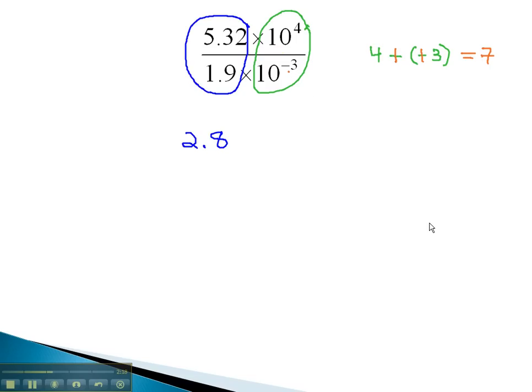Be careful not to do 4 minus 3 and get 1. We're doing 4 minus a negative 3. This means we now have 2.8 times 10 to the 7th. And this becomes our answer in scientific notation when dividing.